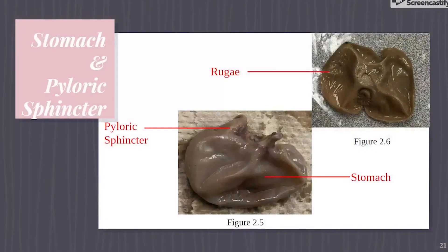The rugae in the stomach, pictured in Figure 2.6, help to ensure that the food is broken down into smaller pieces by increasing the surface area of the stomach. Once the food has been broken down fully, the pyloric sphincter, pictured in Figure 2.5, relaxes its muscles to allow the chyme to pass through into the small intestines.